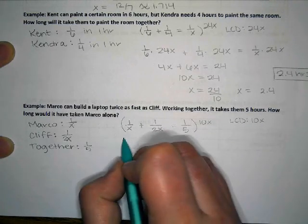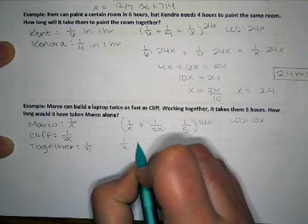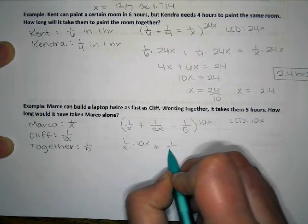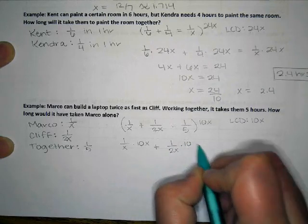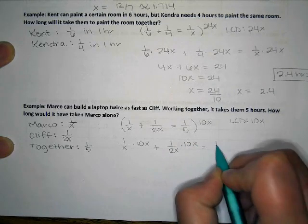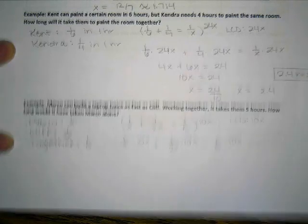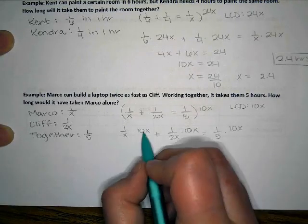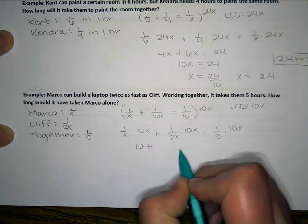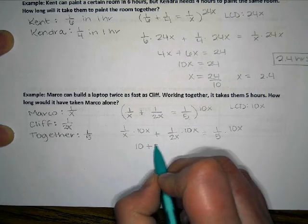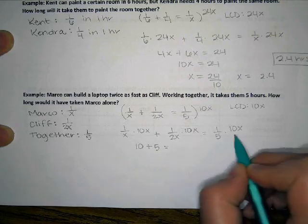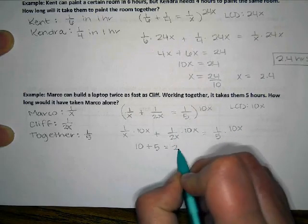So this entire equation is going to be multiplied by 10 X. So I'm going to have one over X multiplied by 10 X and one over two X multiplied by 10 X and one over five multiplied by 10 X. And so this is going to be 10 and this is going to be five and that's going to be two X.